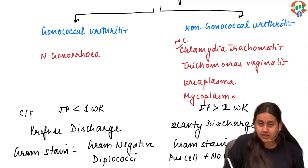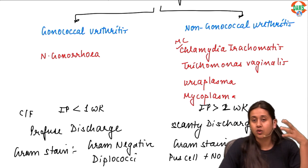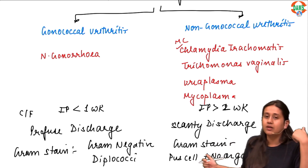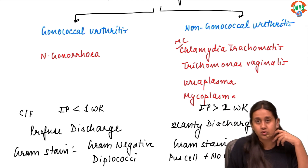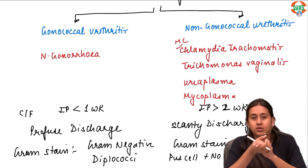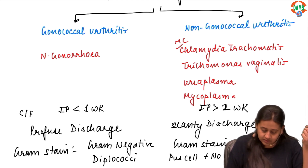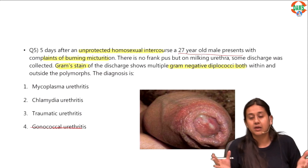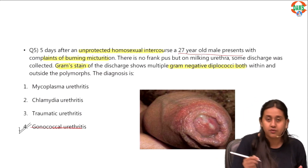Please remember — it is very difficult to demonstrate non-gonococcal organisms like Chlamydia in a routine gram stain, so you do not see any organism on gram stain in non-gonococcal urethritis. But in gonococcal urethritis you do see gram-negative diplococci. In the index question, there are gram-negative diplococci, and that is why the answer becomes option number 4.